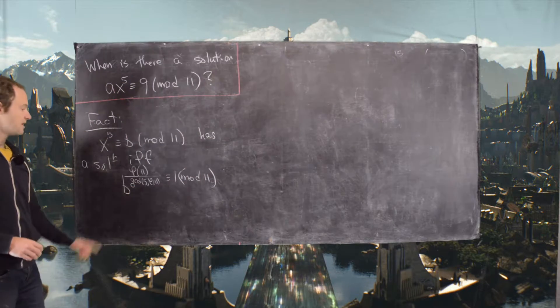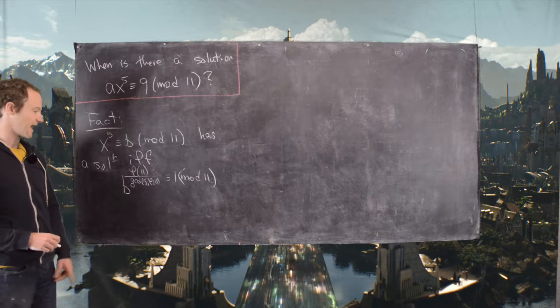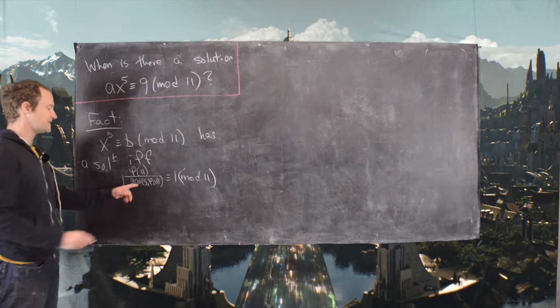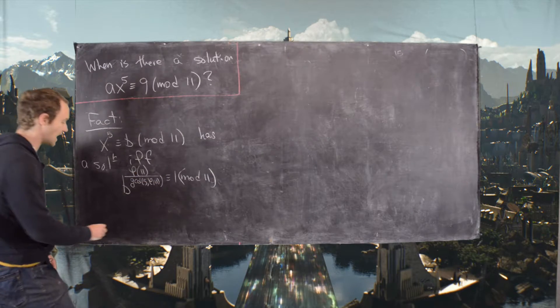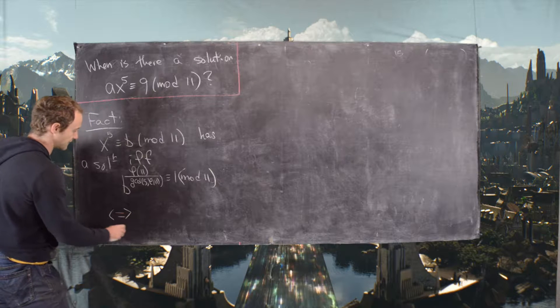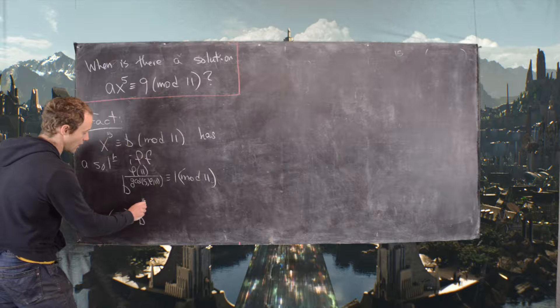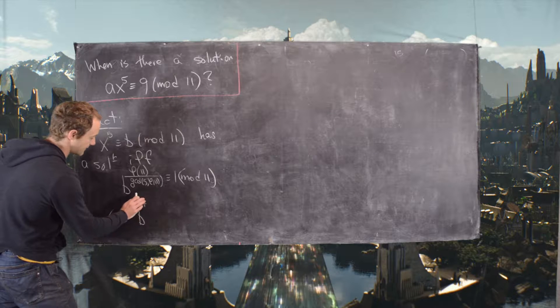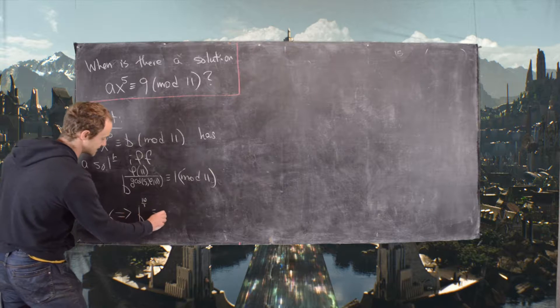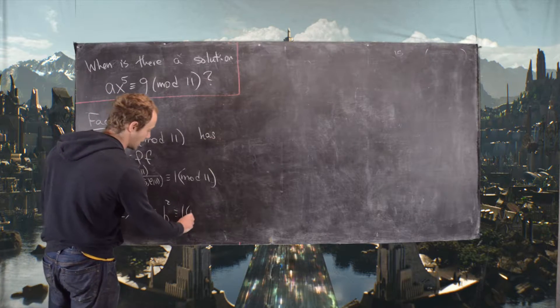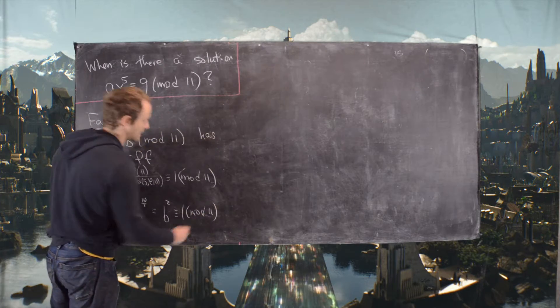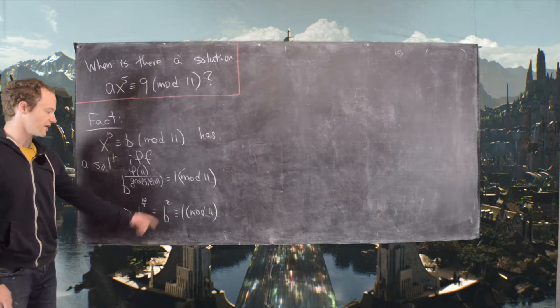Now notice φ(11) is 10, and that makes the gcd(5, φ(11)) equal to 5. So that's equivalent to B^(10/5), which is B^2 ≡ 1 (mod 11).